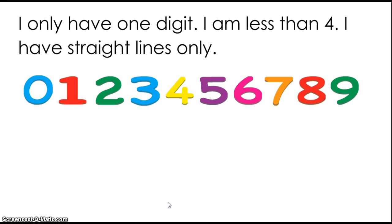Let's see how well you've been paying attention and how well you know your digits. Here are a few riddles for you. I only have one digit. I am less than 4. I have straight lines only. Have you figured out what it is yet? Well, if it's less than 4, we know it's not 9, 8, 7, 6, 5, or 4. It has to be less than. A 3 doesn't have any straight lines. A 2 has at least one curved line. A 1 has all straight lines. A 0 is one curved line. So it has to be 1. Did you get that? Give yourself a pat on the back.